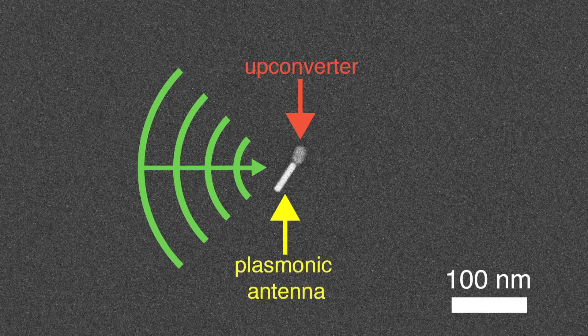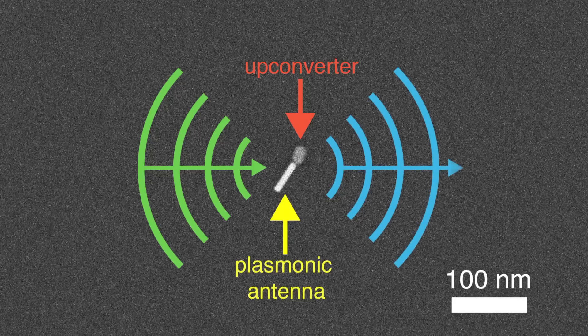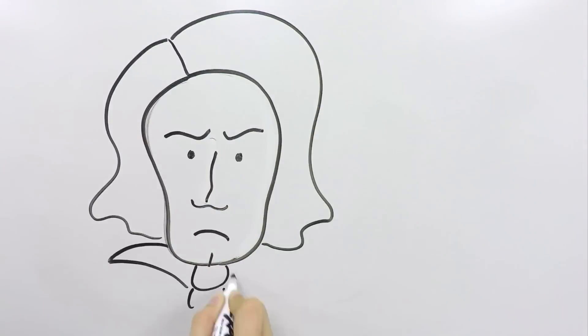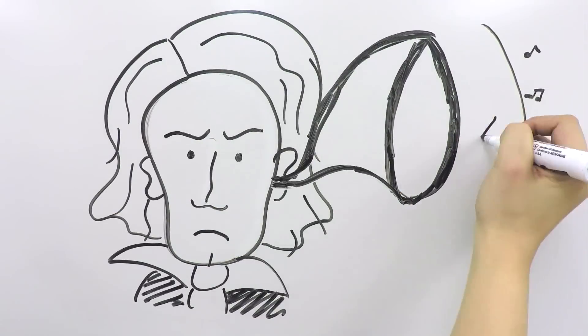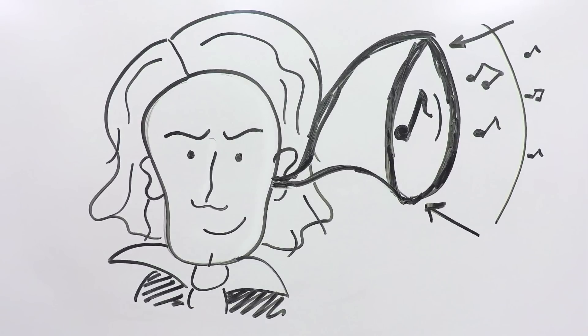The antenna can also help broadcast upconverted light from the nanoparticle back out into space. Like an old-fashioned hearing aid, plasmons can help funnel a signal from a large space into a small space.